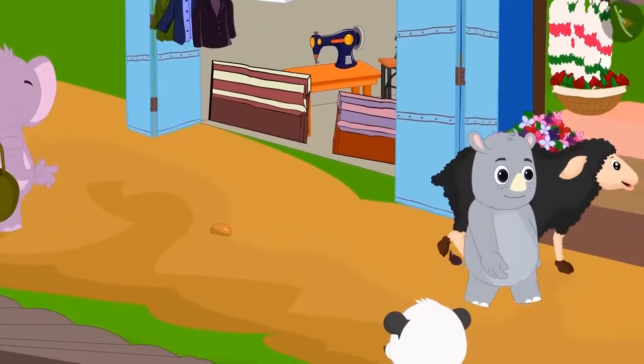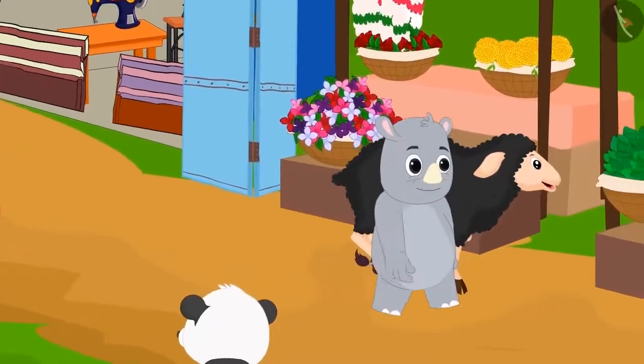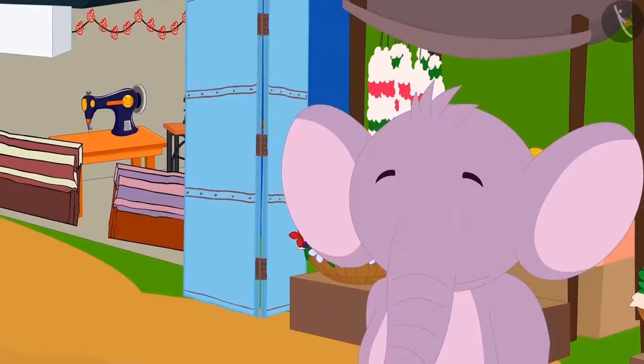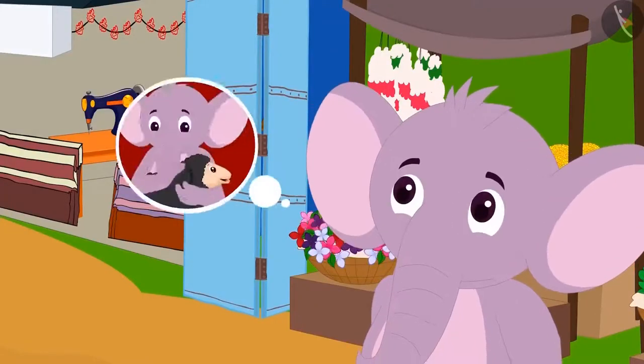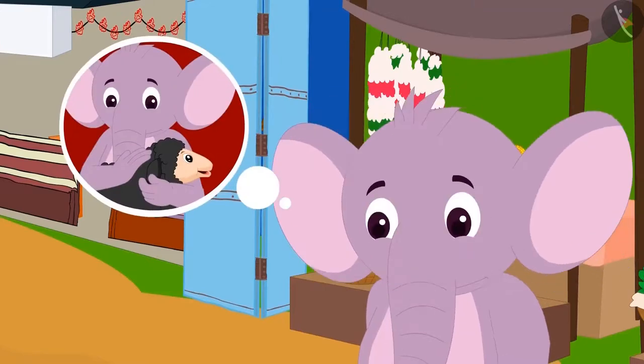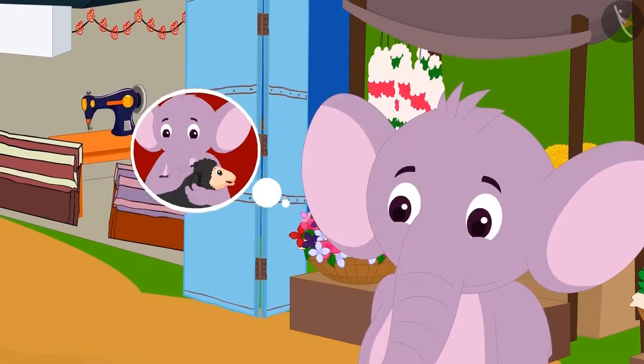There he saw one of his sheep with Gaggoo. Only Appu had one and only black sheep in the entire village, so he quickly recognized it.